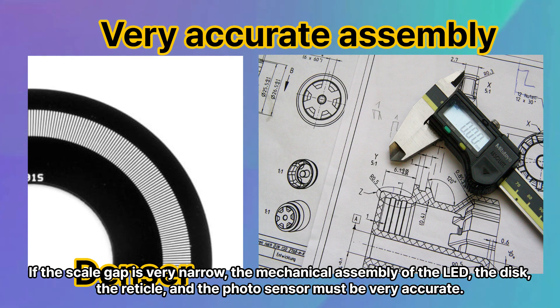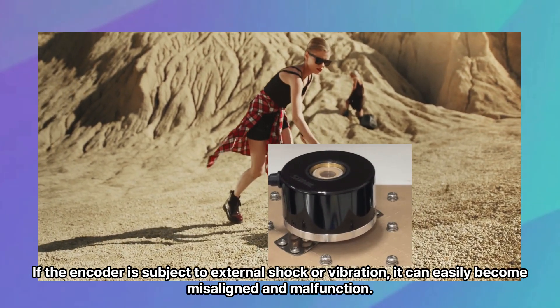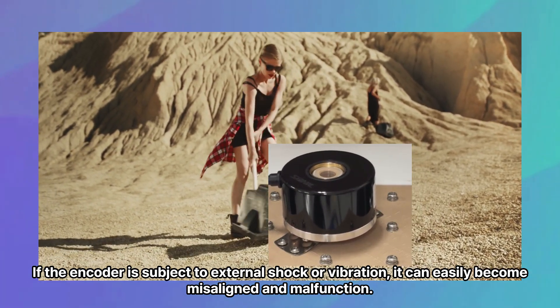If the scale gap is very narrow, the mechanical assembly of the LED, the disk, the reticle, and the photosensor must be very accurate. If the encoder is subject to external shock or vibration, it can easily become misaligned and malfunction.